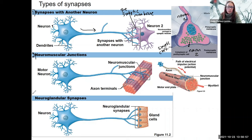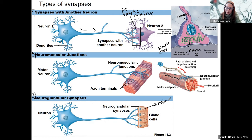Here is another type: neuroglandular synapses. Neurons can also synapse onto glands. This is a type of synapse where the gland is going to release hormone. So this neuron is going to cause the release of hormone via this synaptic communication.